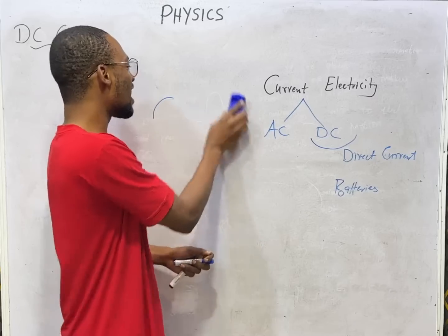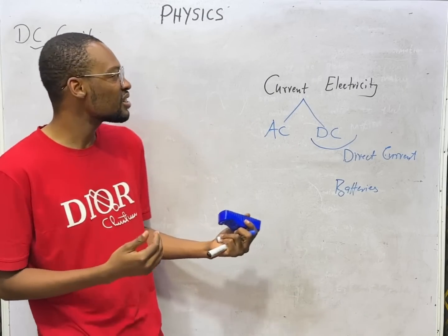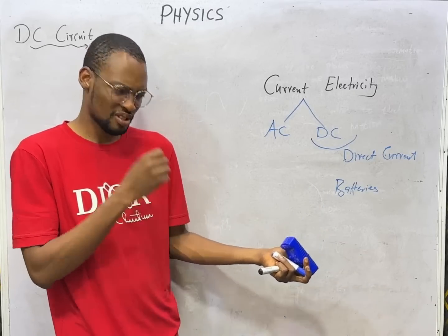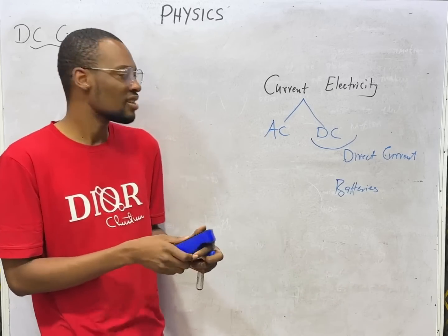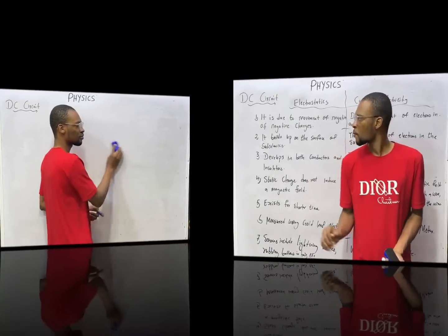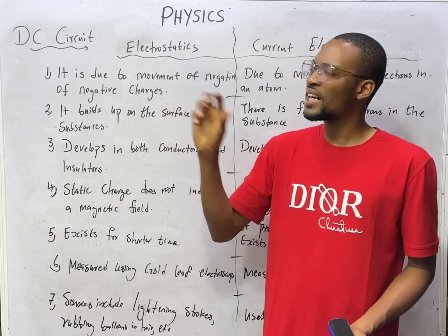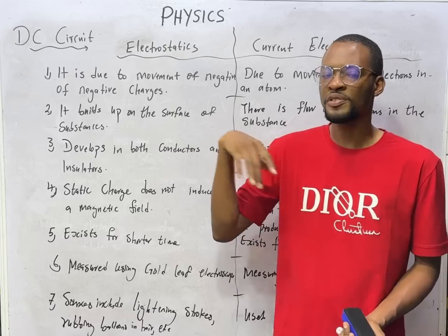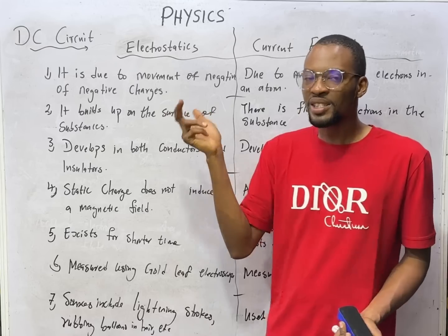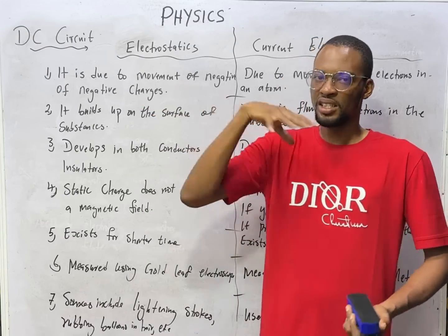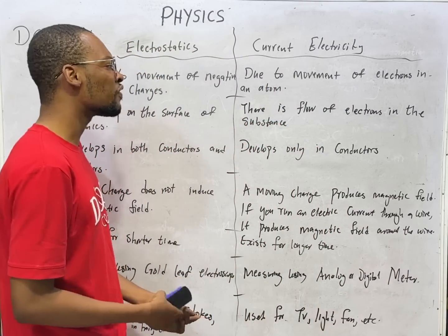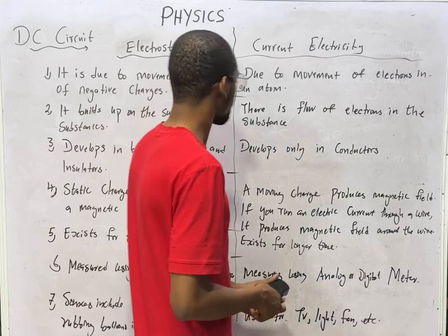Now let's look at the differences between static electricity and current electricity. Let me draw a table to compare them. Electrostatics is due to charges built up on the surface of materials — these charges are not moving. Current electricity is due to the flow of electrons through a substance.